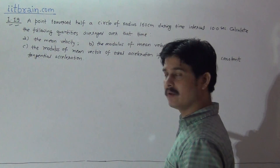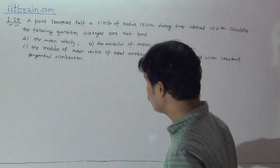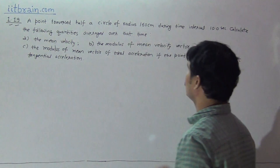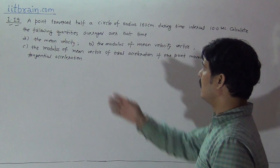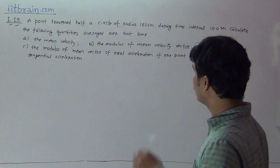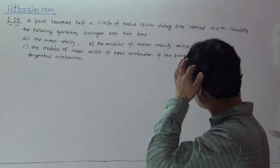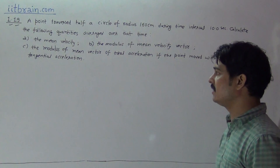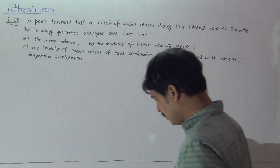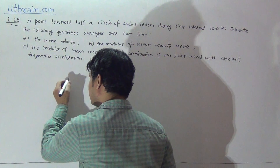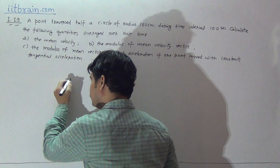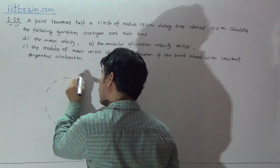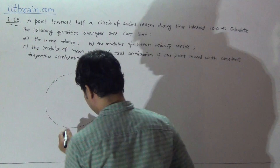The three parts are: first, the mean velocity; second, the modulus of the mean velocity vector; and third, the modulus of the mean vector of total acceleration, given that the point moved with constant tangential acceleration. This means a particle is revolving in a circle, and the question asks about a half circle — a semicircle.